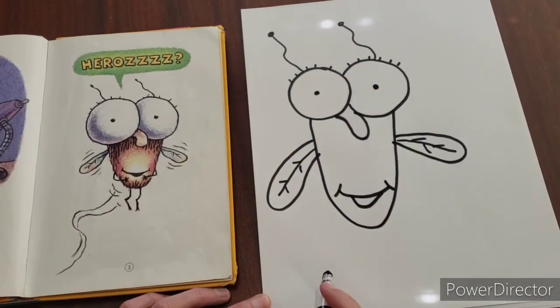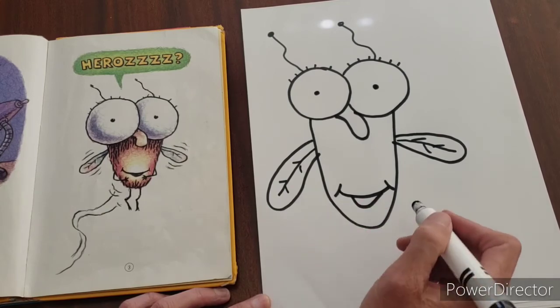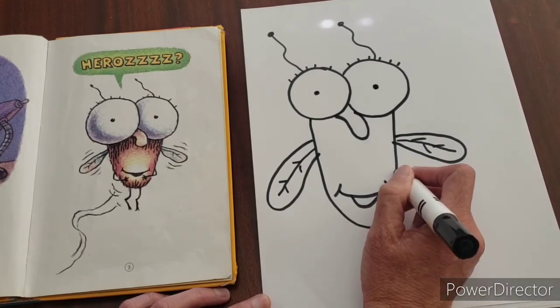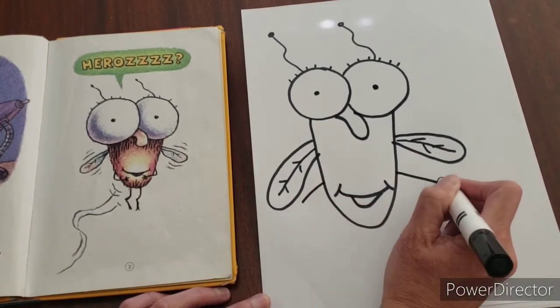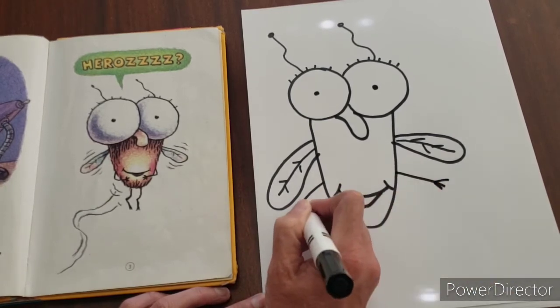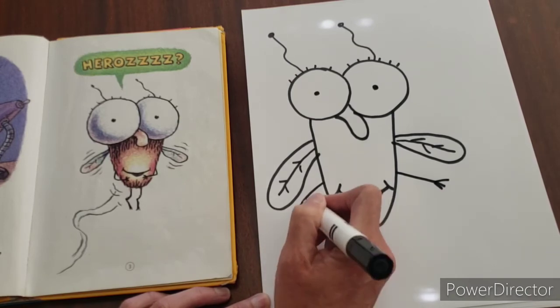Then you're going to give him really tiny little arms and they're just coming out of the side of his body too. And there's three little fingers on the side. It looks like four. Let's give him four.